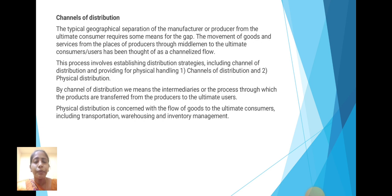Next, channel of distribution. A typical geographical separation of a manufacturer or producer from the ultimate consumer requires some means to bridge that gap. The movement of goods and services from the place of producer through middlemen to the ultimate consumer has been channelized. This process involves establishing a distribution strategy including channel of distribution and providing physical handling. By channel of distribution, we mean the intermediary or process through which the product is transported from producer to the ultimate user. Physical distribution is concerned with the flow of goods to the ultimate consumer, including transportation, warehousing and inventory management. Thank you.